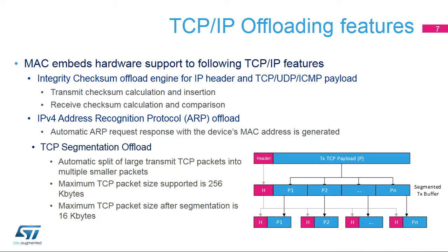We have seen that filtering capability on layer 3 and layer 4 is available. Other processing on these upper layers is also offered by the peripheral. Checksums of IPv4 headers or checksums of TCP, UDP, or ICMP data payload are computed by the hardware. These values are then either transmitted in the output packets or compared to the received ones to detect any error in the transmission. Another layer 3 offloading feature is the automatic ARP protocol response, sending the device's MAC address to the requester without any software action.